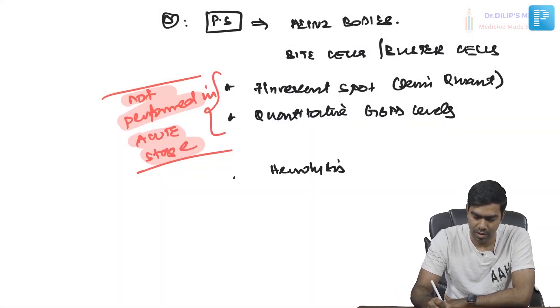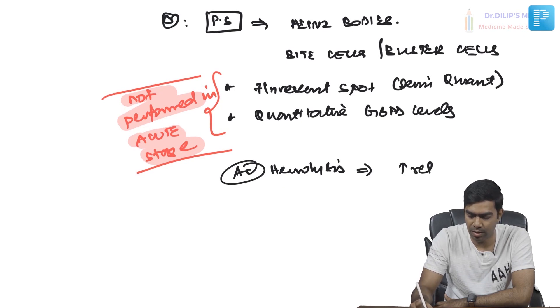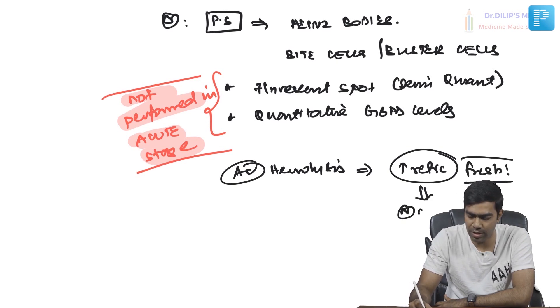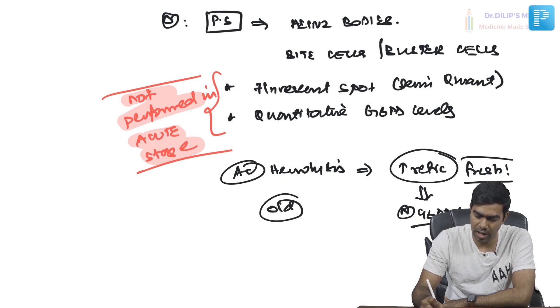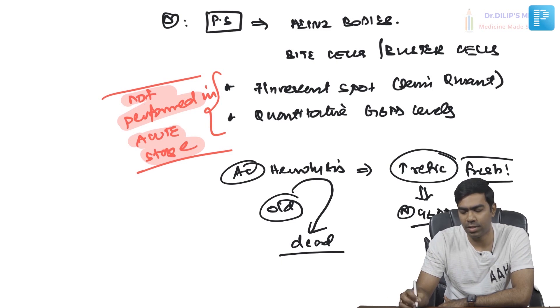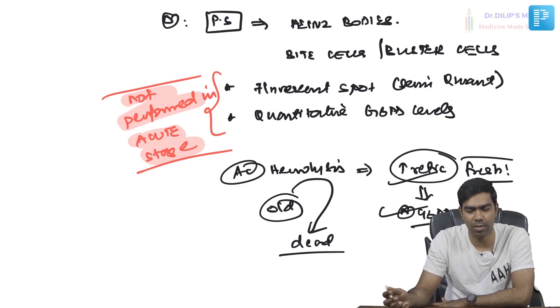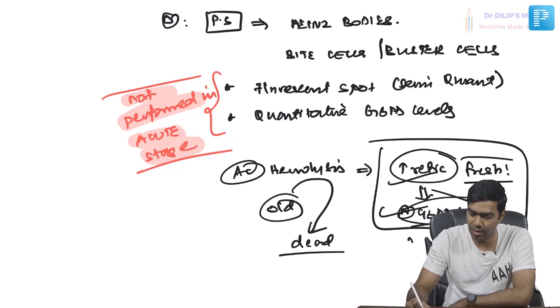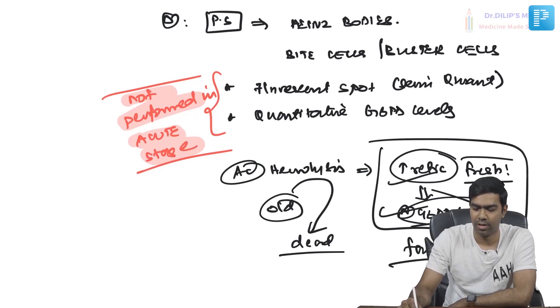Testing during acute hemolysis gives falsely normal results because hemolysis destroys the old, G6PD-deficient RBCs. The bone marrow responds by producing reticulocytes, which are fresh RBCs that may still have normal G6PD levels. With only these new cells circulating, the G6PD level appears falsely normal — so always test in remission.